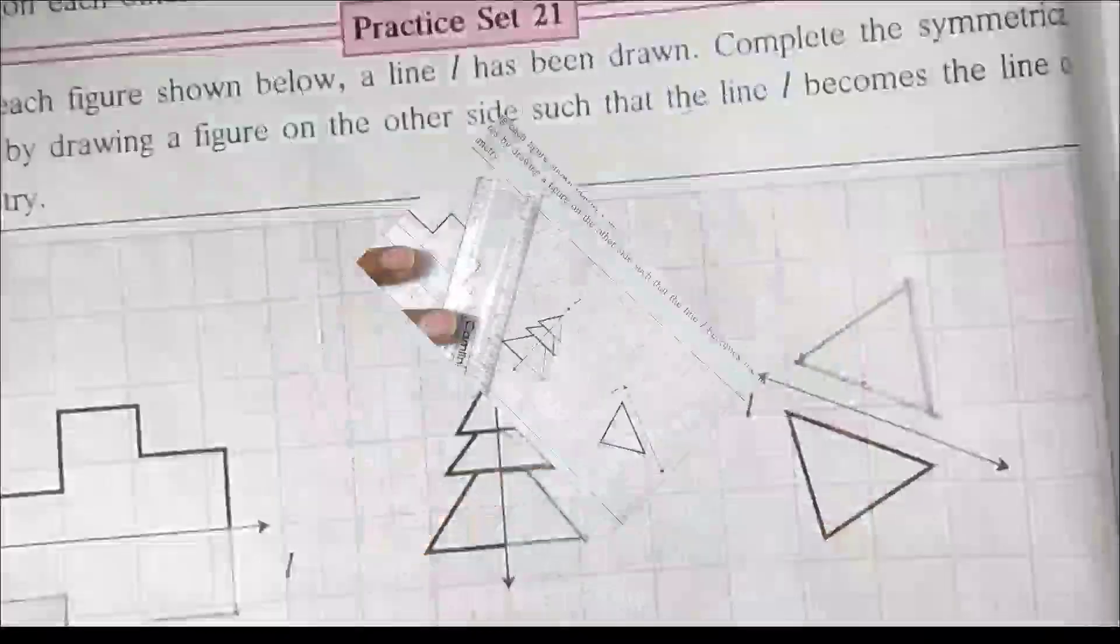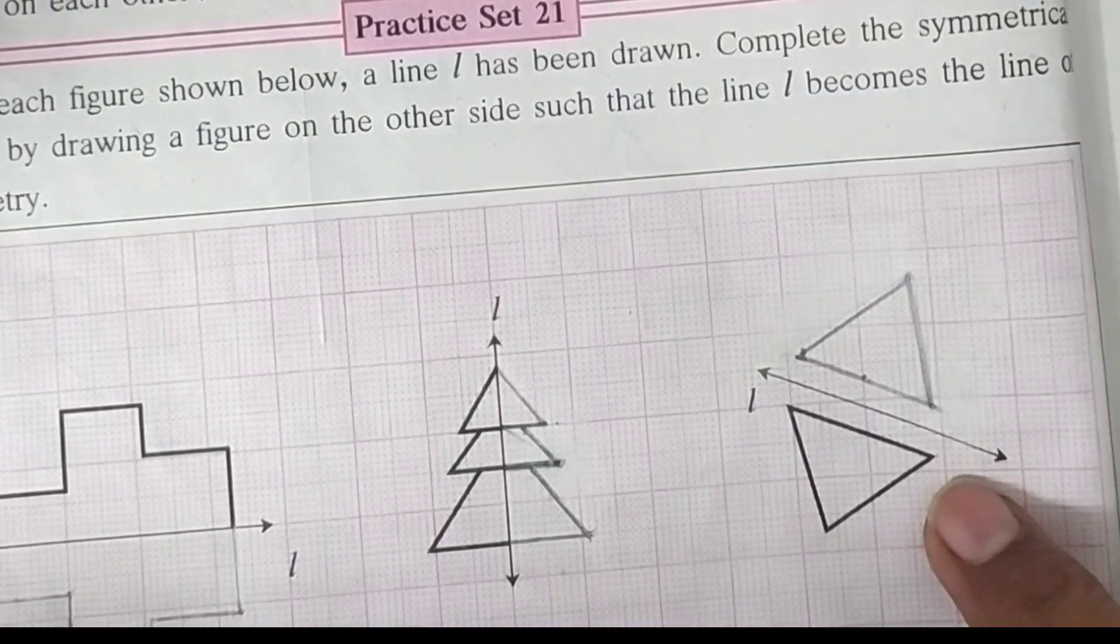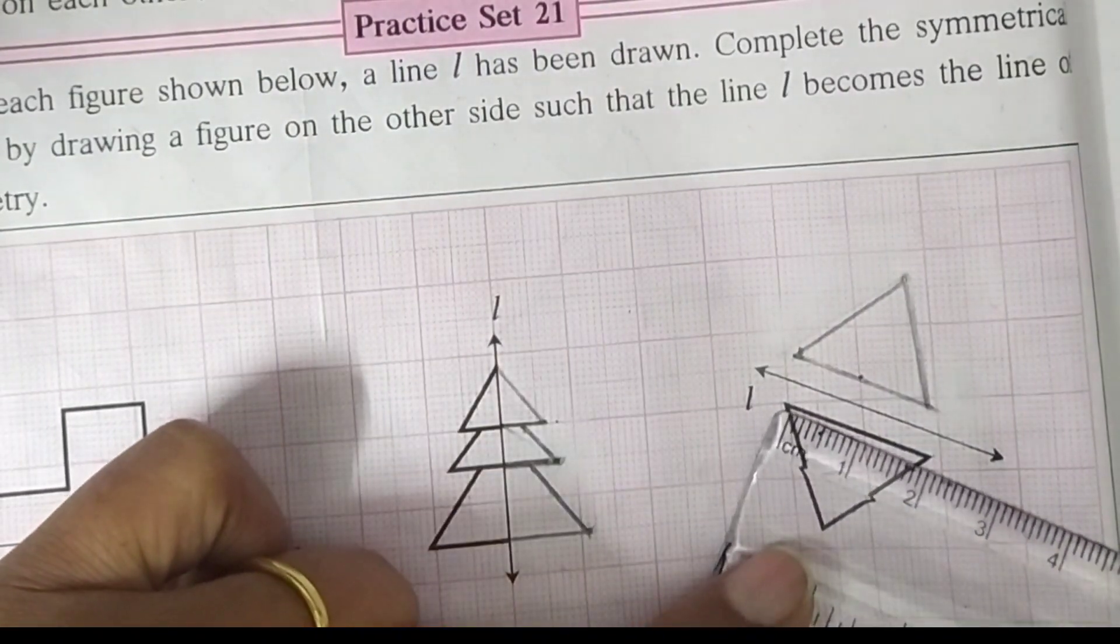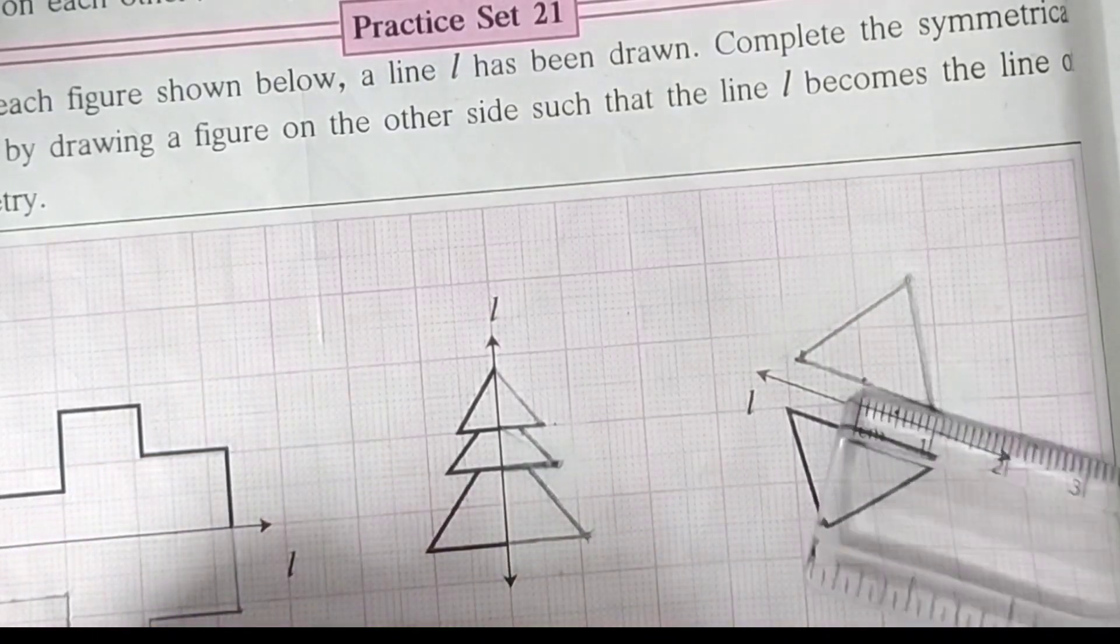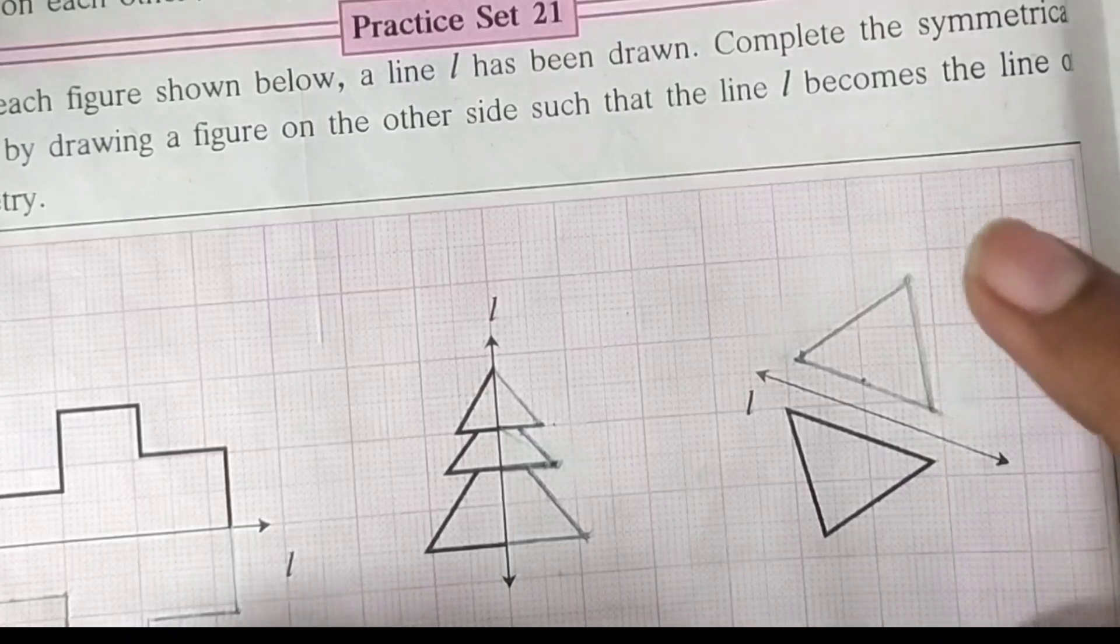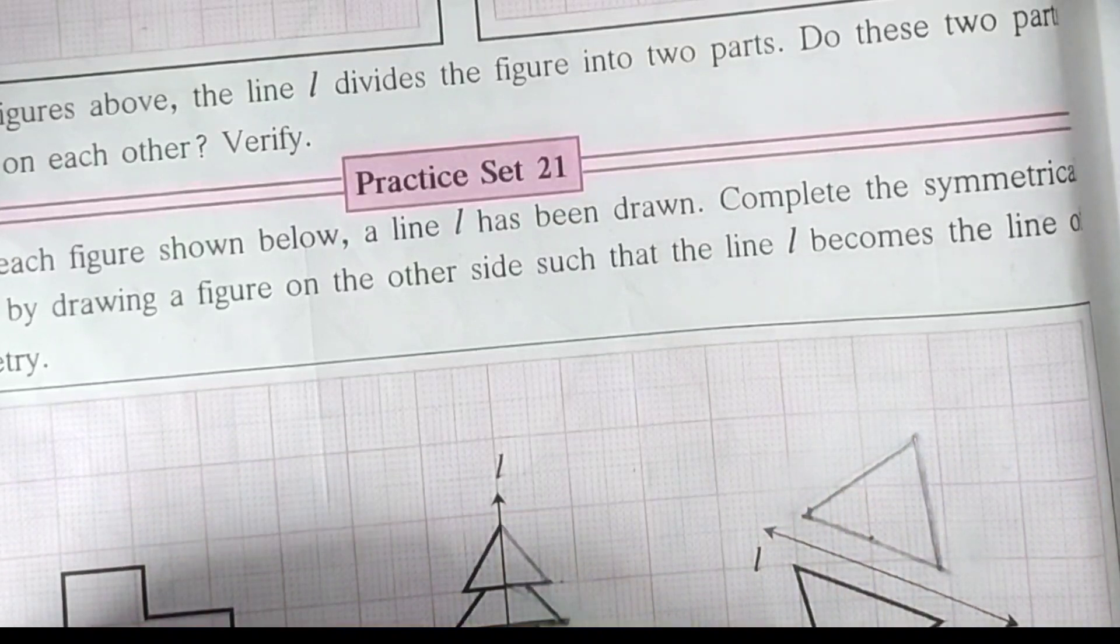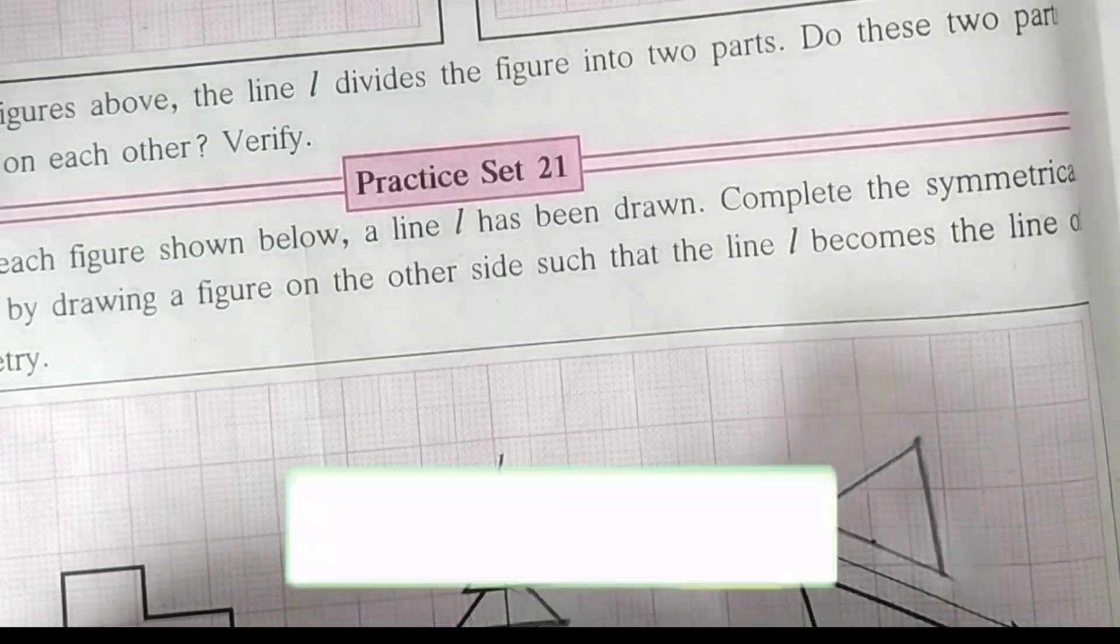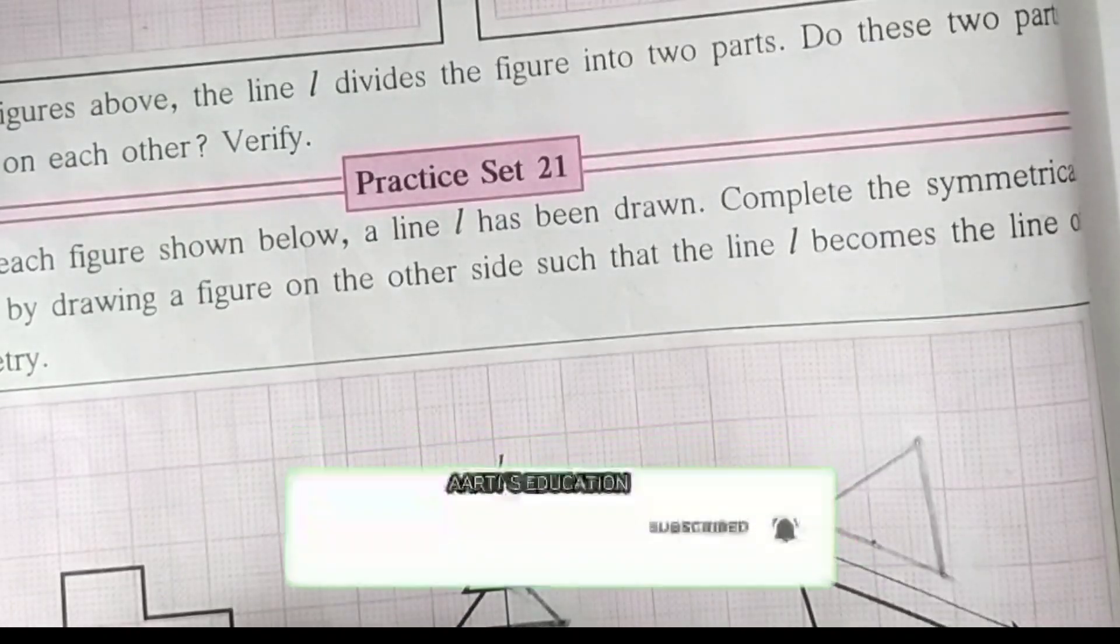Now for third figure. This is the symmetrical shape for our third figure. For it, you have to measure the arms of angles and then leave the places on upper side of line L. So, our Practice Set 21 is complete now. Let's practice it very well. And don't forget to subscribe my channel. See you in next video. Thanks for watching this video.